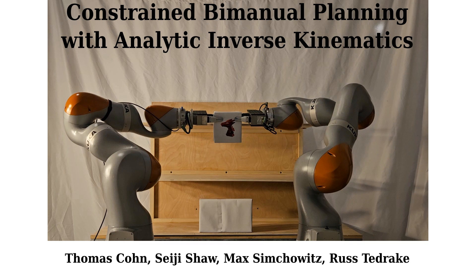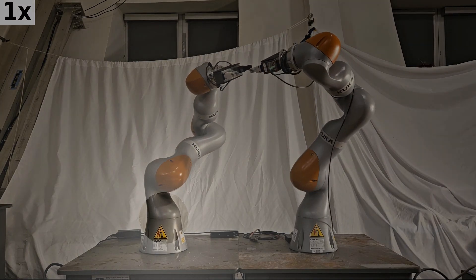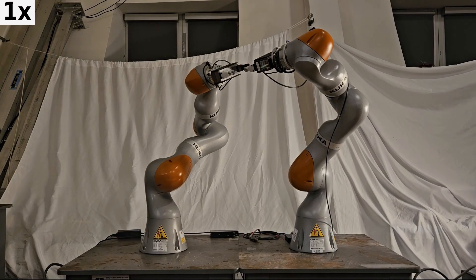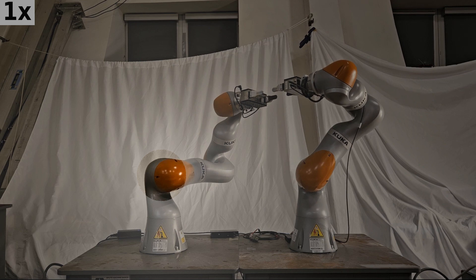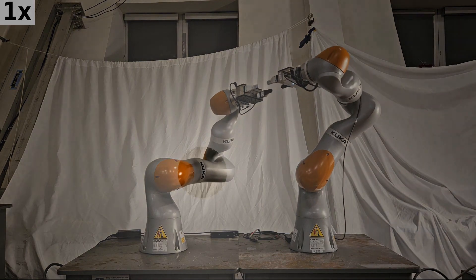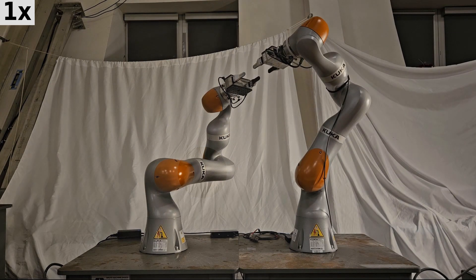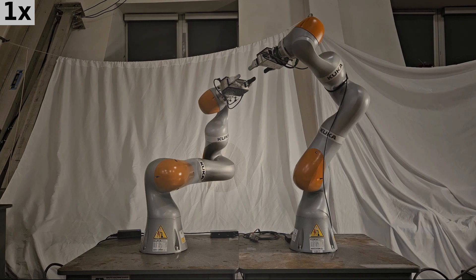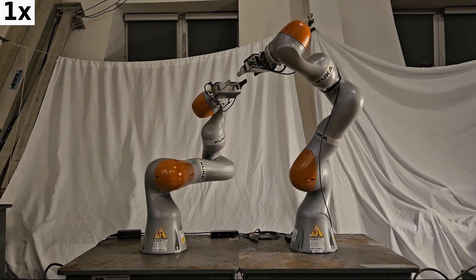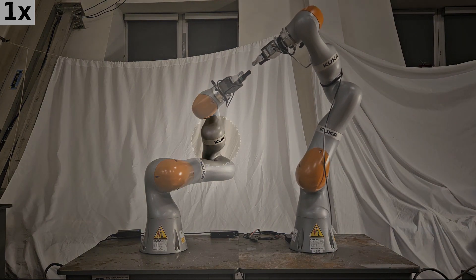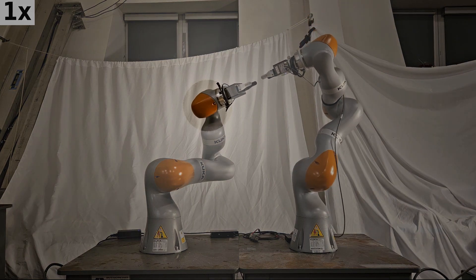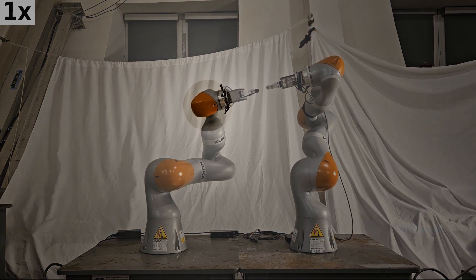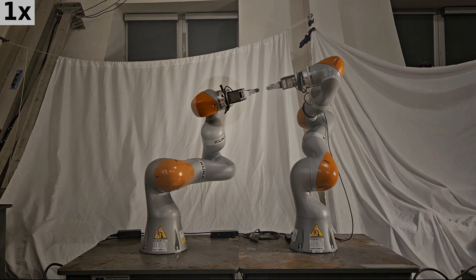We parameterize the constrained configuration space that arises when a bimanual robot holds an object with two hands. Here we visualize the degrees of freedom of our parameterization. Each joint in the controlled arm can be moved individually, and the subordinate arm will follow it with analytic inverse kinematics. By construction, every point in the parameterized configuration space maps to a kinematically valid configuration of the two arms.